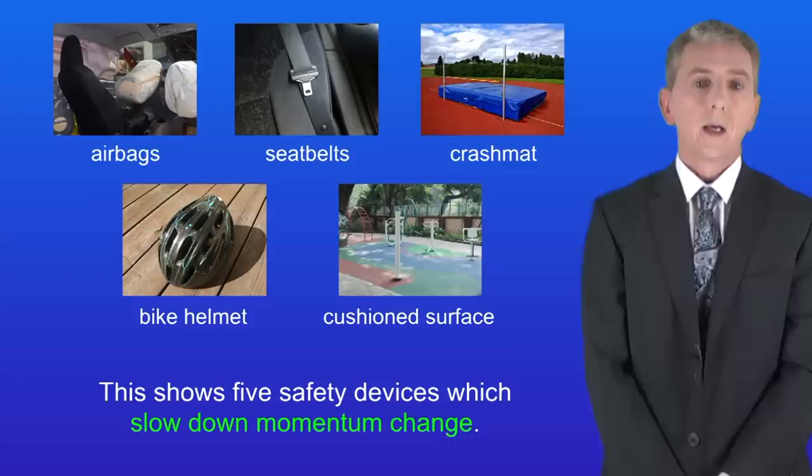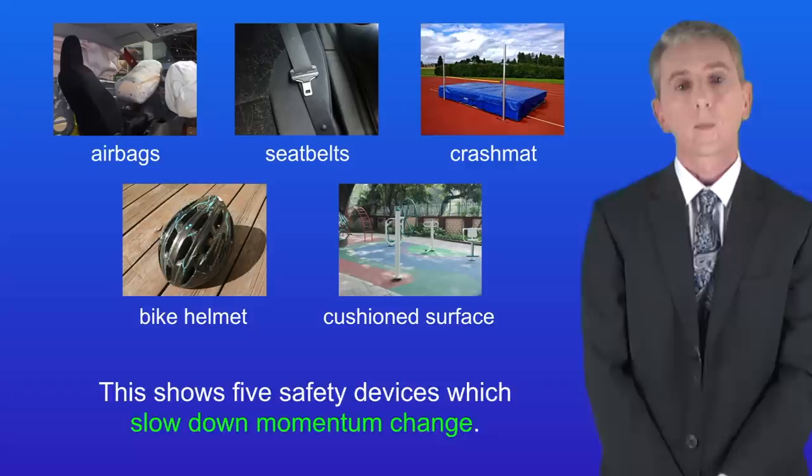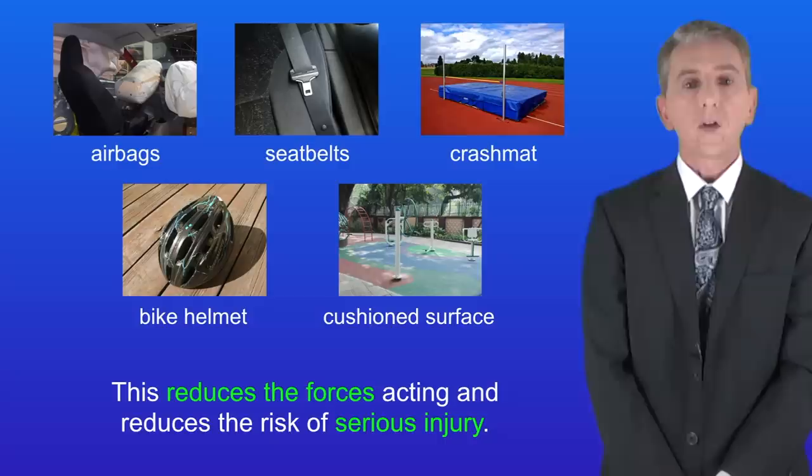I'm showing you here five safety devices which slow down momentum change. We've got airbags and seatbelts in a car. We've got a crash mat for athletics, a bike helmet and a cushioned surface in a playground. All of these slow down momentum change. This reduces the forces acting and reduces the risk of serious injury.